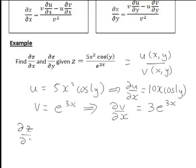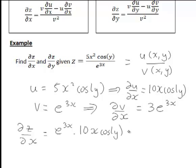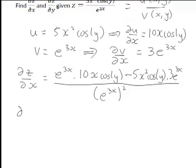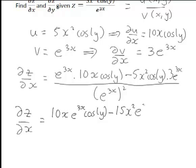Applying the quotient rule, the partial derivative of z with respect to x is e to the 3x times 10x·cos(y), minus 5x squared·cos(y) times 3e to the 3x, all divided by e to the 3x squared. This simplifies to 10x·e to the 3x·cos(y) minus 15x squared·e to the 3x·cos(y), all divided by e to the 6x.